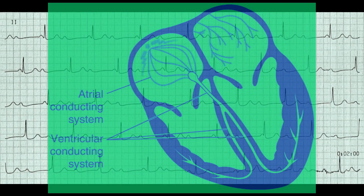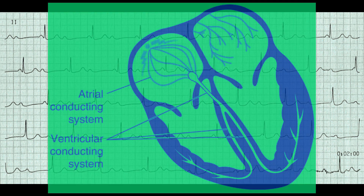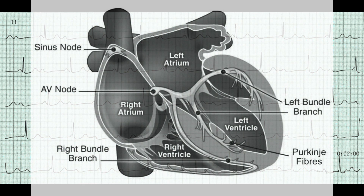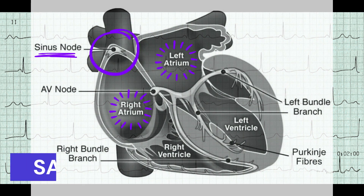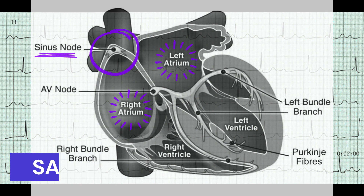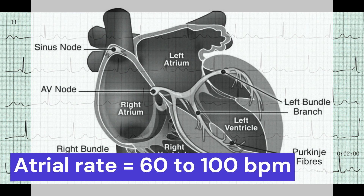In third-degree heart block, the atria and ventricles are paced by separate electrical systems. The atria are paced by the sinoatrial or SA node, which generates electrical impulses at a regular rate of around 60 to 100 beats per minute.